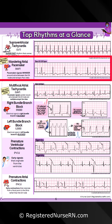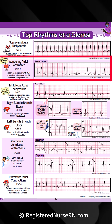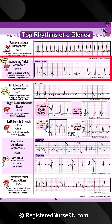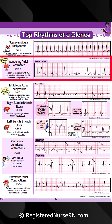Wandering atrial pacemaker is where pacemaker signals wander around the atria between the SA node and ectopic foci sites. It's going to have a rate of between 60 to 100 beats per minute, and there's going to be three or more different P waves throughout the rhythm.